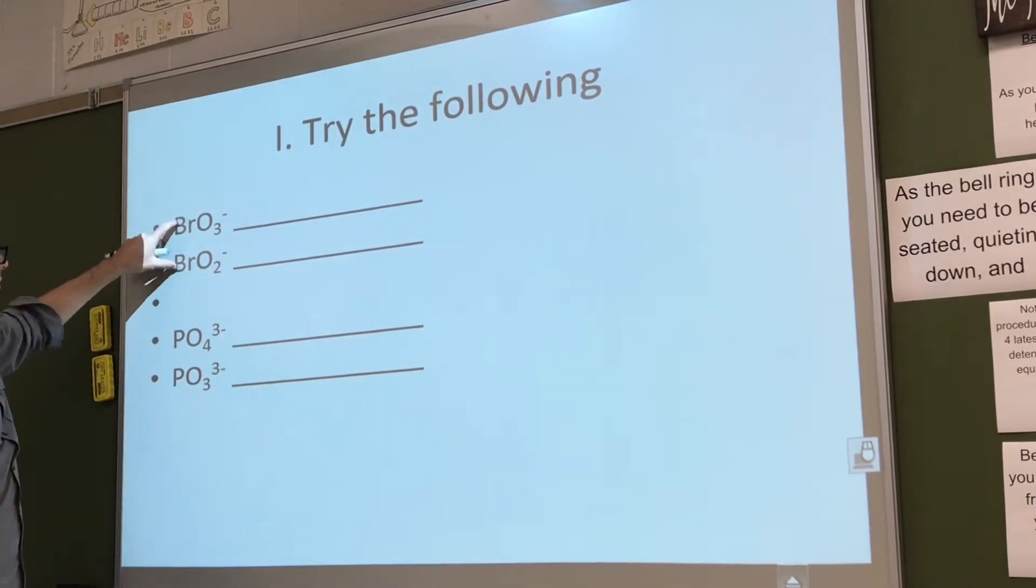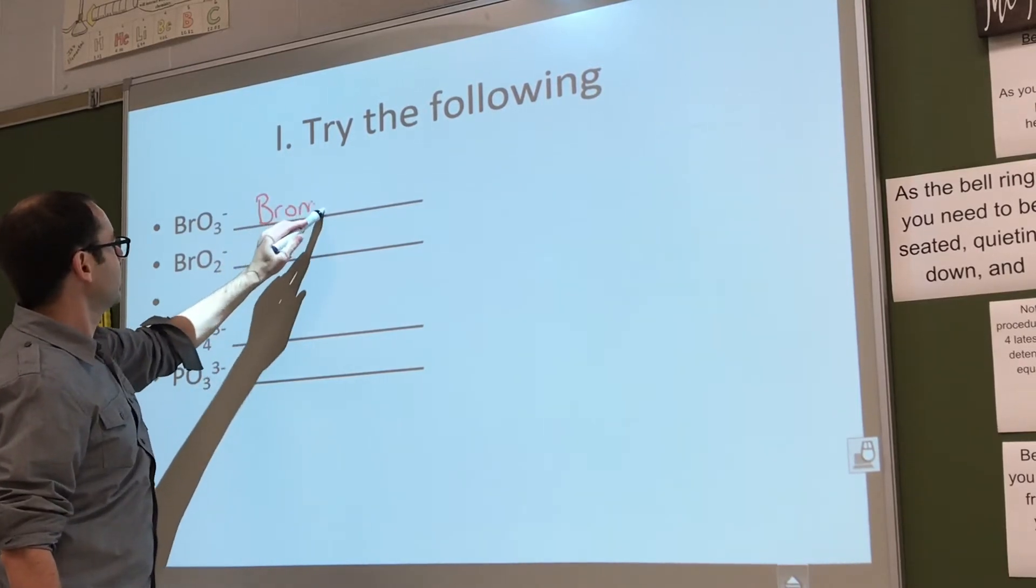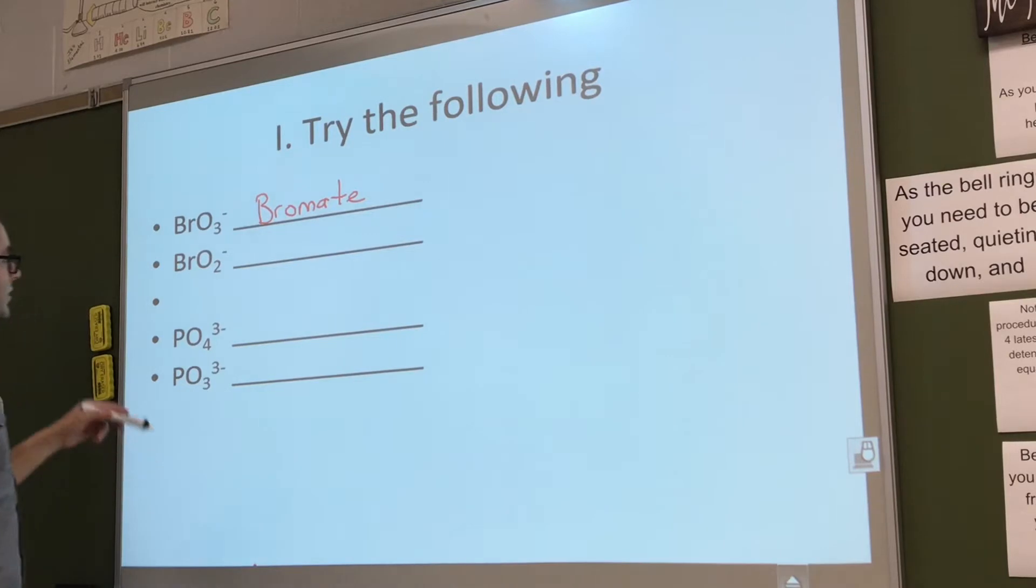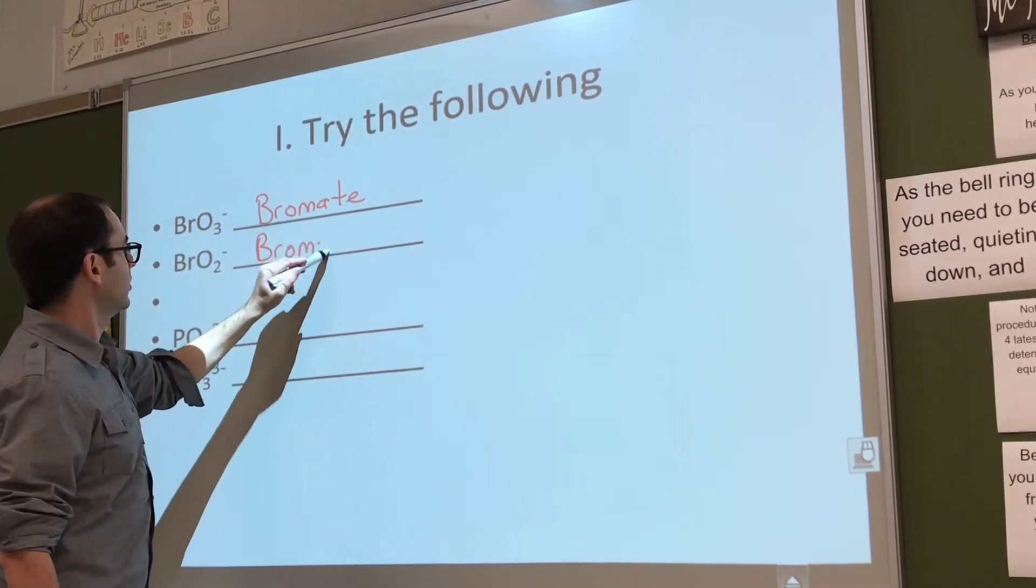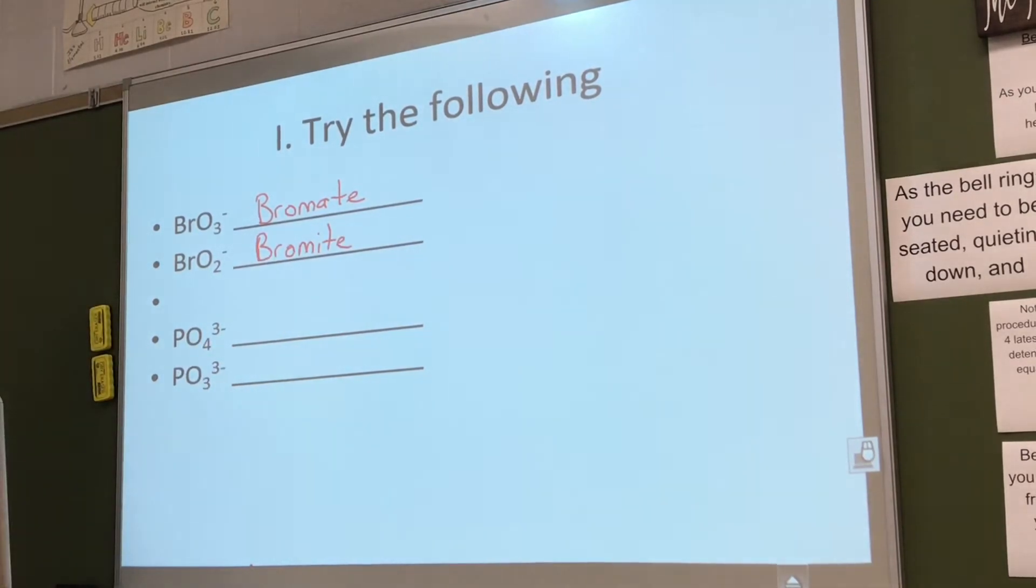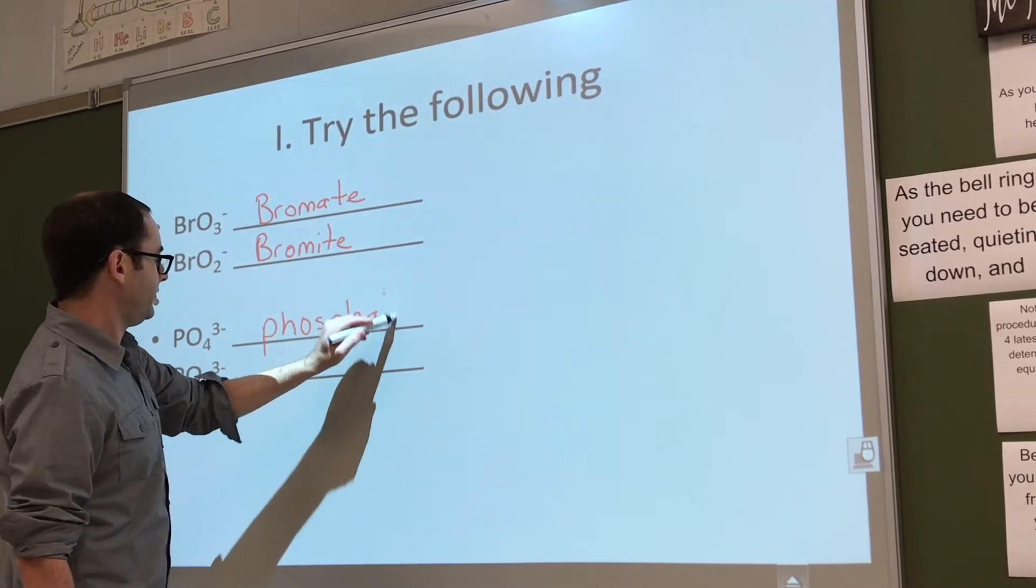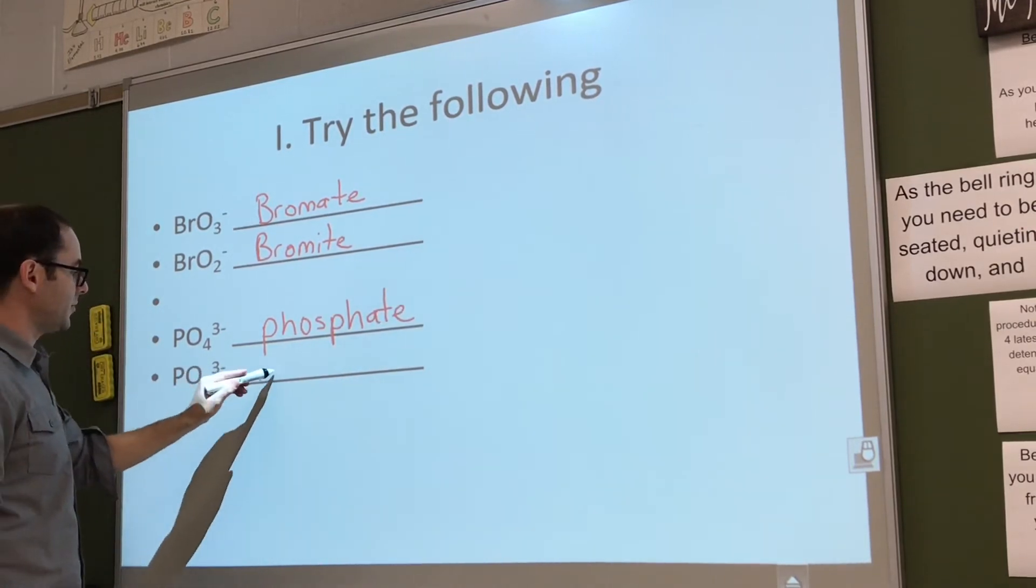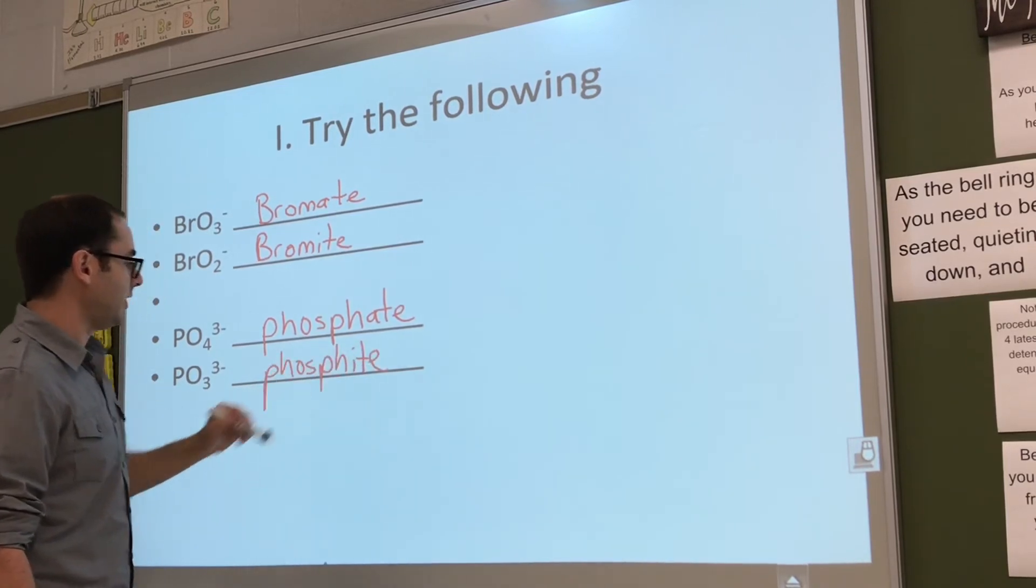Which of these two did you memorize? Yeah, the three, right? What is it? Chromate. So what's BrO2 minus 1? Bromite. Which of these phosphorus ones? The first one. Which is what? Phosphate, PO4 minus 3. And then PO3 minus 3 is going to be phosphite.